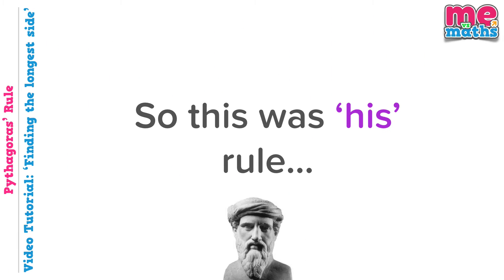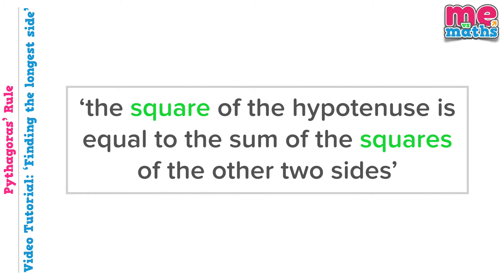So now we know what the hypotenuse is, let's get back to Pythagoras and his rule, and it was this: the square of the hypotenuse is equal to the sum of the squares of the two other sides. Now on the one hand this looks simple, it's just one sentence, but there's actually quite a lot of maths in there, so let's break it down by looking at an example of what it actually means.